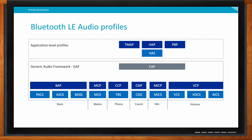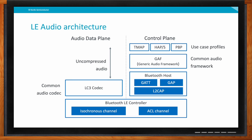How is LE audio put together — can you discuss the architecture? There are basically multiple things happening at once. We have the audio data plane, which handles the audio stream — uncompressed audio data goes into the LC3 codec for encoding or decoding, then into an isochronous channel to the phone or earbud. Next to that, on a different plane, is the control plane, which is the GATT and GAP Bluetooth host that goes through the ACL channel. The really interesting thing is that control and audio are not on the same plane. If you're not using audio, you don't have to keep the stream open, so you save a lot of bandwidth and energy by just having the control plane open. When you want audio, the stream opens quickly — it's a lot faster and saves more energy compared to classic audio.